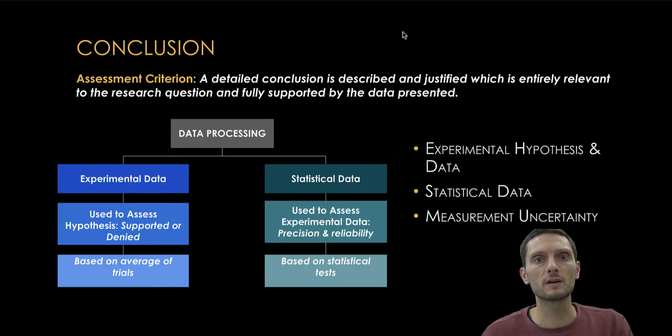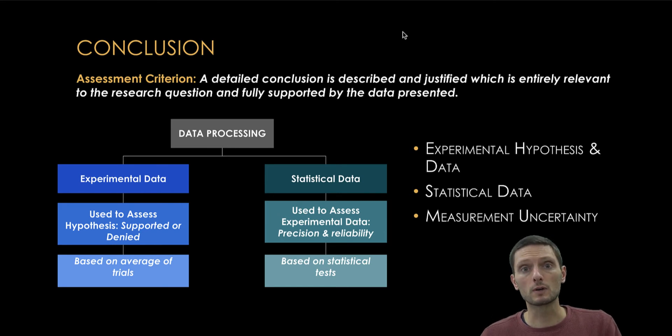The next component of the conclusion is statistical data. In this portion, we're trying to assess the quality and the precision of the data that's collected. But before we discuss those, we need to distinguish between experimental and statistical data. In the course of the experiment, you collect data, preferably multiple trials, and calculate an average, and then use those values, that experimental data that's collected, to then do some additional statistical tests.